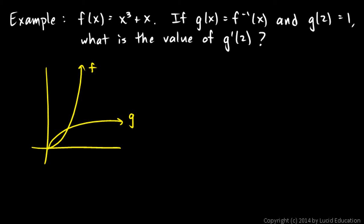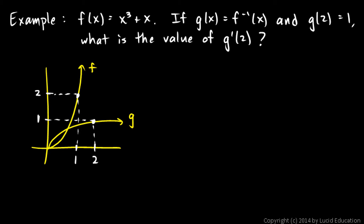We know that function g goes through the point (2, 1), so let's mark that — (2, 1) — which means that function f must go through the point (1, 2). Now my picture here is not perfect, my scale is not great, but I think the diagram is adequate. It captures this information. We have function f, its inverse here called g, which is a reflection across this line. We have a point here (2, 1), which we were given, and a corresponding point here (1, 2).